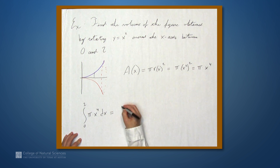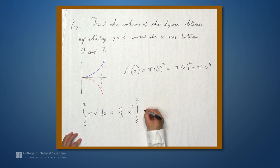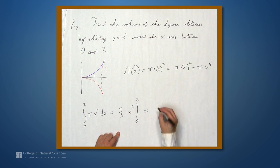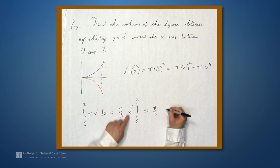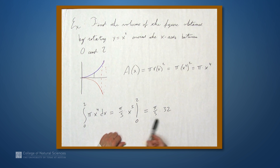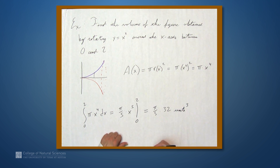And what do we get? We get π over 5 times x to the fifth, evaluated between 0 and 2. When we evaluate this at 0, zero to the fifth is 0, so all we have to worry about is the 2. And we get π over 5 times 2 to the fifth, which is 32. So the volume of this solid is 32π over 5 units cubed.